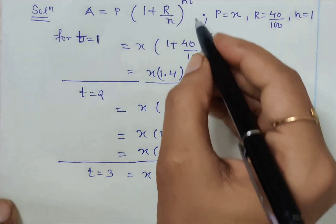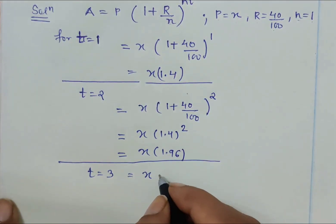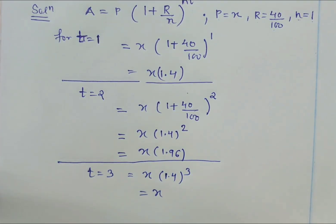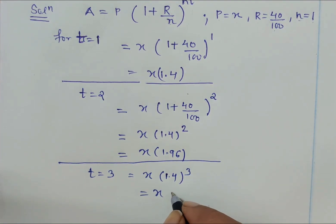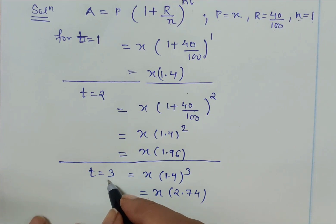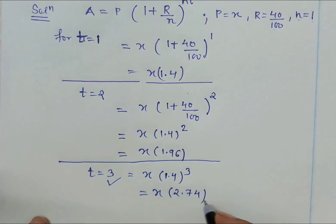Now the value of t is 3, so 1.4 whole cube. The cube of 1.4 is 2.74, so here it is 2.74.